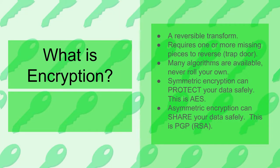So what is encryption? If all you know is what you see in movies, that's probably not good, so we're going to clarify it. Encryption is a reversible transform — we transform data from a readable state to an unreadable state with the intention of transforming it back to its original state. Reversal requires possession or knowledge of a missing piece; that piece is a password, or more precisely a hash produced from the password. The missing piece is sometimes called a trap door. There are many algorithms available for encryption, so never roll your own. Many experts have analyzed all the known algorithms over years, and many have been found to be weak. Whatever you roll is going to be weak, so use one of the existing ones.